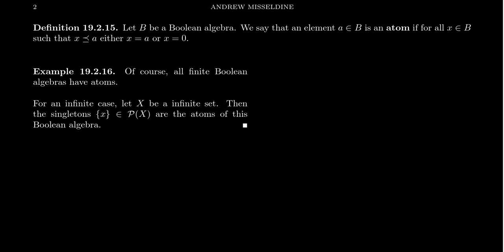Throughout this last chapter of our lecture series, we keep on having these analogies. Group theory is to semi-lattice theory, as lattice theory is to ring theory, as rings with unity is to bounded lattices, and finally, as fields are to Boolean algebras. Boolean algebras are the most highly structured objects in the lattice setting, and they're kind of like fields when you make that nice comparison.